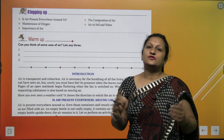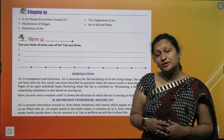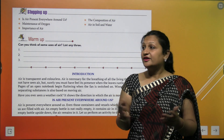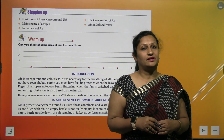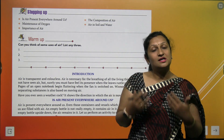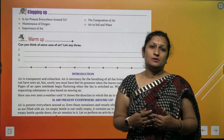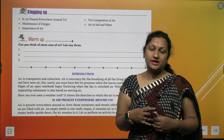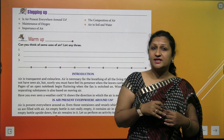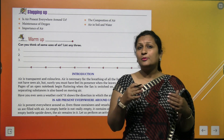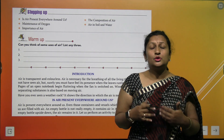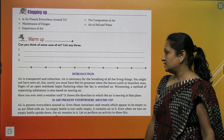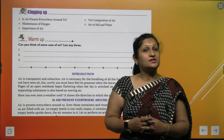Air is present everywhere around us, but are you able to see air? No, we cannot see air. Air is everywhere around us — hum saans le rahe hai, hum saans chhod rahe hai. But kya hume air dikhaai deti hai? Nahi. Kya hum air ko taste kar sakte hai? No. Kya us ki smell aa rahi hai? Nahi. To air kaisi hui? Air transparent hai, air colorless hai.